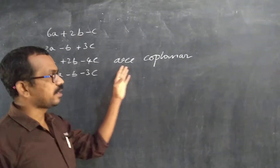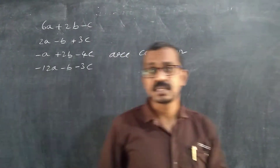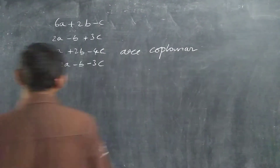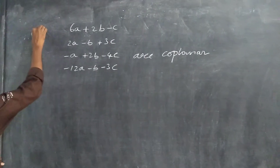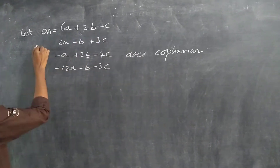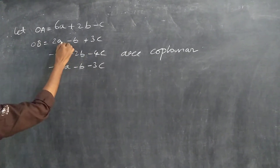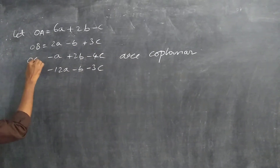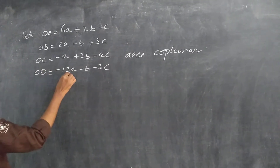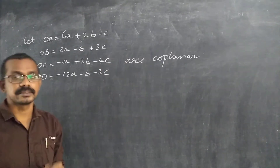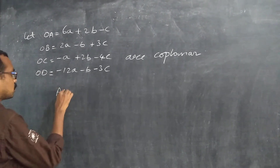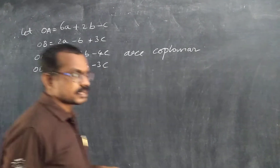Four vectors are given. Find whether they are coplanar. Coplanar means the determinant equals zero. Let OA equal to 6a plus 2b minus c, and OB equal to 2a minus b plus 3c, and OC equal to minus a plus 2b minus 4c, and OD equal to minus 12a minus b minus 3c. Are these coplanar? Coplanar means determinant equals zero. First, find AB.